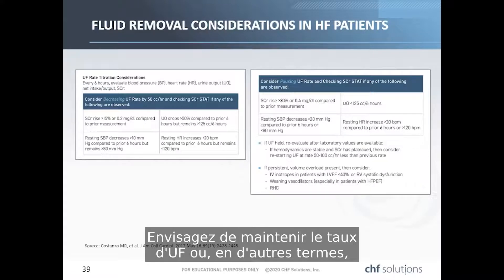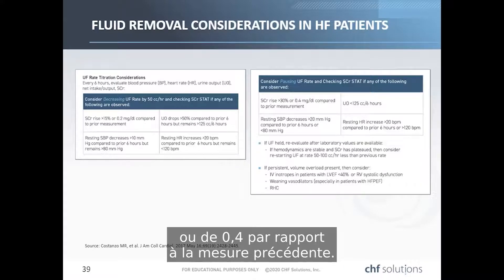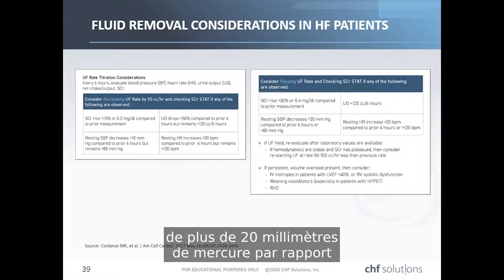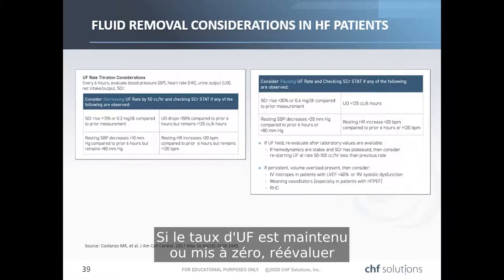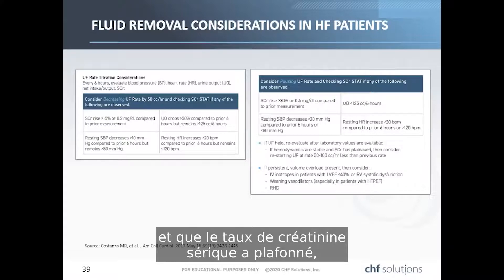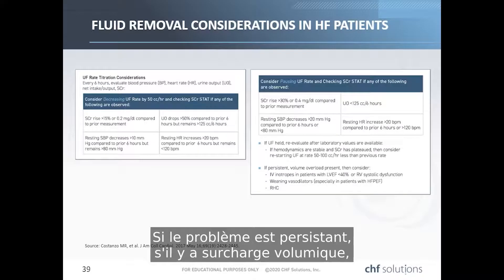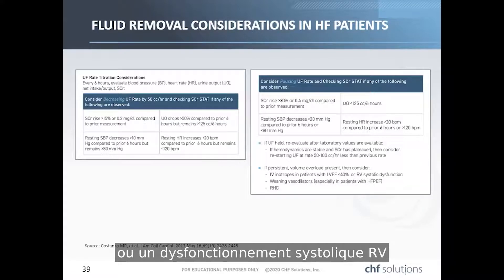Consider holding the UF rate—setting it to zero—if any of the following occur: serum creatinine rises over 30% or 0.4 from prior measurement, urine output falls below 125 cc's in 6 hours, systolic blood pressure decreases by more than 20 mmHg or falls below 80, or heart rate increases over 20 beats per minute or rises above 120. If the UF rate is held, re-evaluate after laboratory values are available. If hemodynamics are stable and serum creatinine has plateaued, consider restarting at 50 to 100 cc's per hour less than the previous rate. For persistent volume overload, consider IV inotropes in patients with ejection fraction less than 40% or RV systolic dysfunction, or weaning vasodilators in patients with HFpEF or right heart catheterization findings.